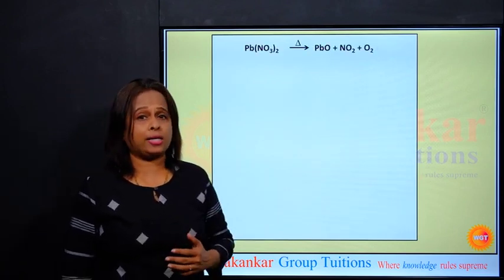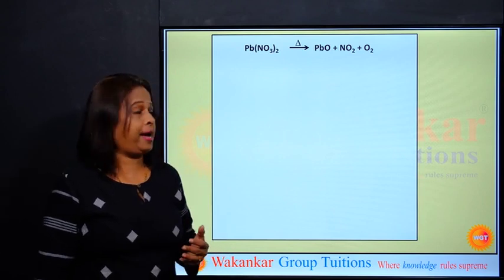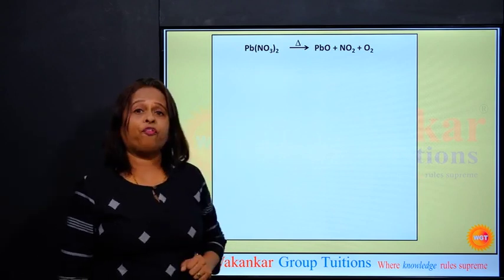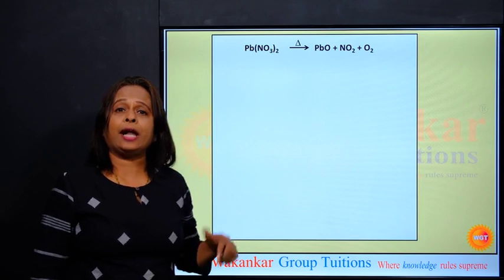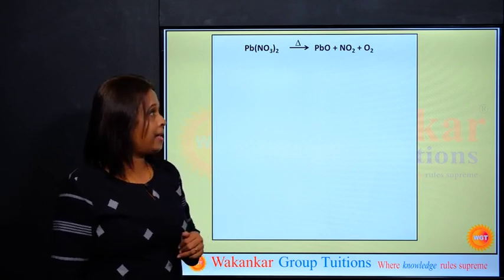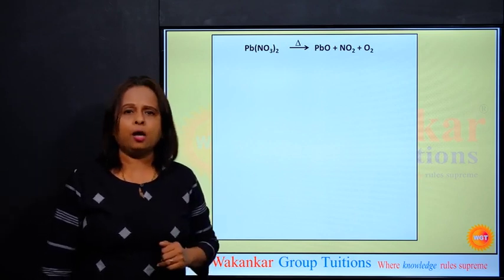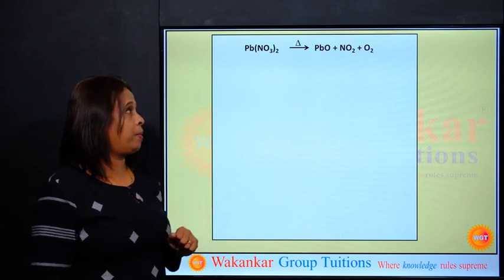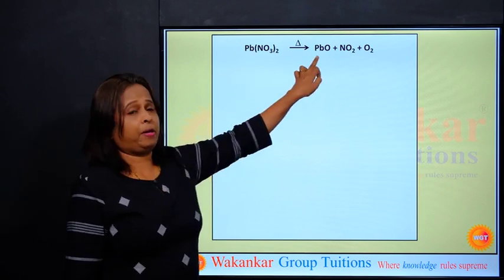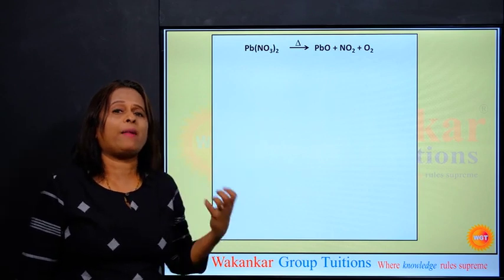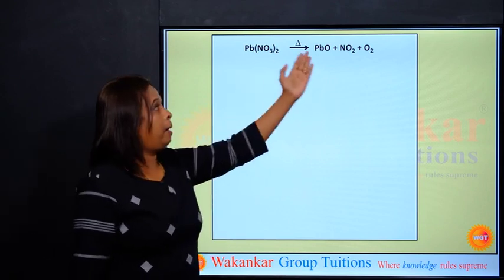Let us go ahead. Pb(NO3)2, lead nitrate, when heated we get PbO, that is lead monoxide, plus nitrogen dioxide, plus oxygen gas. Let us check what is to be done. Pb, Pb. Pehle kis ko dhyan mein lena hai? Metal ko. Pb, Pb.